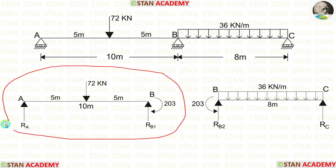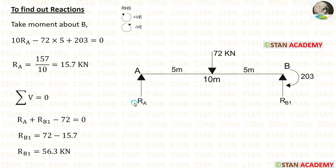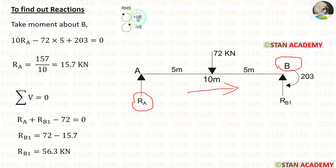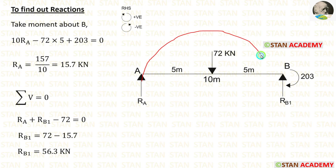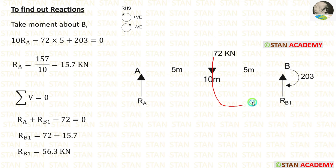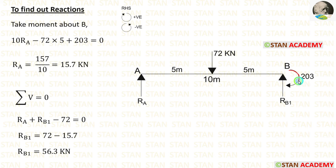First, let us take span AB and calculate the reactions. In this span, I am going to calculate the reaction RA by taking moments about B, moving towards the right-hand side. Clockwise is positive and anticlockwise is negative. The reaction RA acts towards point B in the clockwise direction, so it is positive with a distance of 10m, giving 10RA. The point load acts towards point B in the anticlockwise direction, so it is negative: minus 72 into 5. The moment is acting in the clockwise direction, so it is positive. Finally, we are getting RA equal to 15.7 kN.